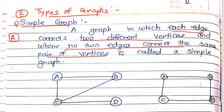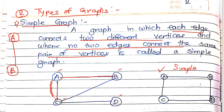For example, if you take vertex A and vertex B, there should be a single edge connecting these two vertices — that is called a simple graph. In the figure shown, there are four vertices: A, B, C, and D. Every edge connects two different vertices, such as A to B and A to C. You don't find two edges connecting the same set of vertices, so this is a simple graph.